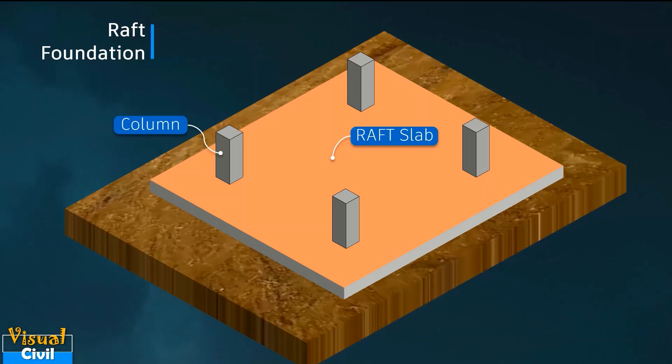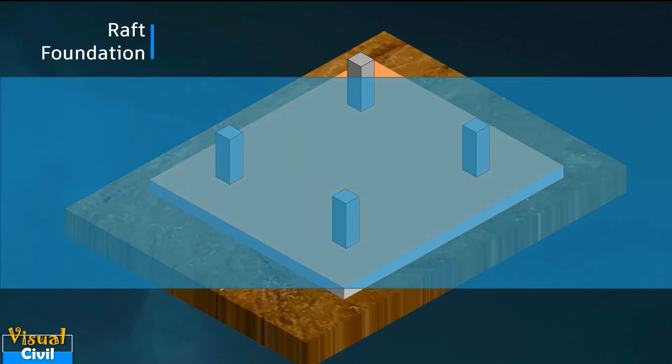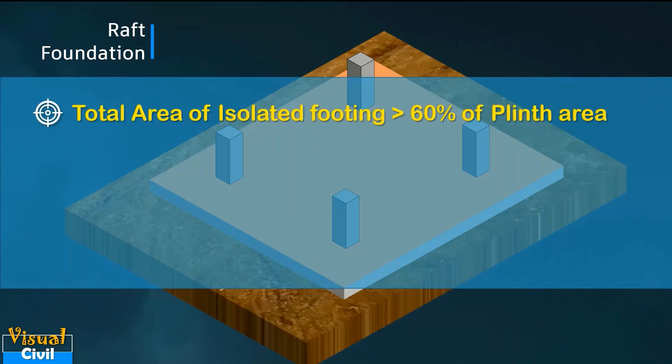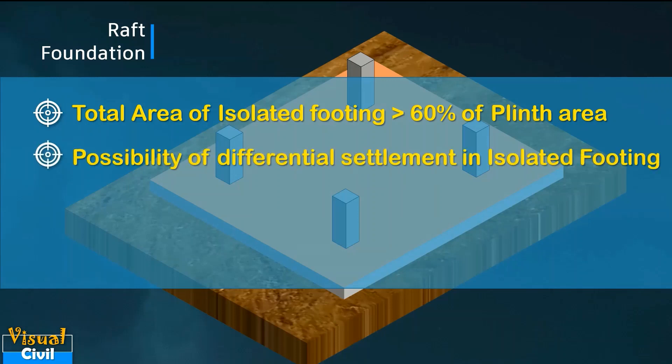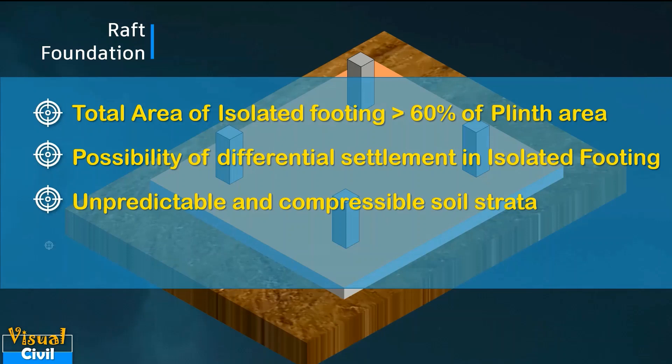In general, the raft foundation is preferred when more than 60% of the total ground area beneath the structure is covered by the isolated footing, or if there is a possibility of differential settlement due to individual footing. It is also preferred when soil strata is unpredictable and compressible, and when basement is to be constructed in a building.